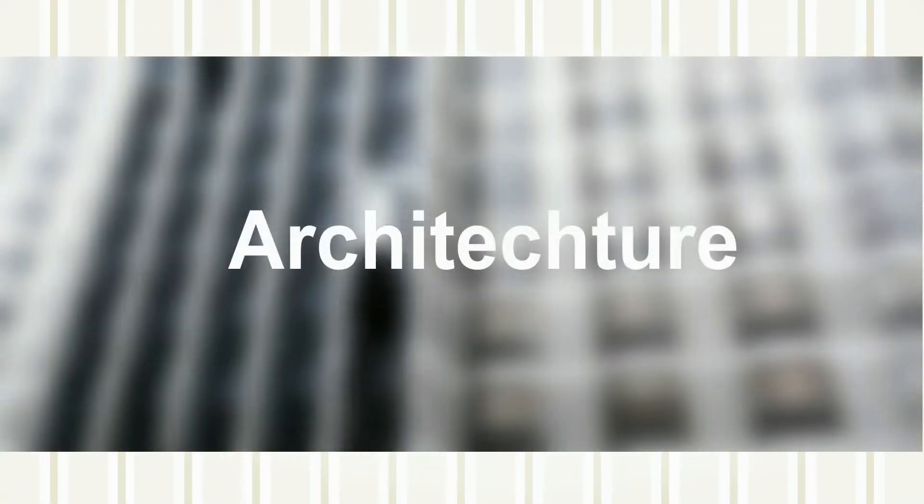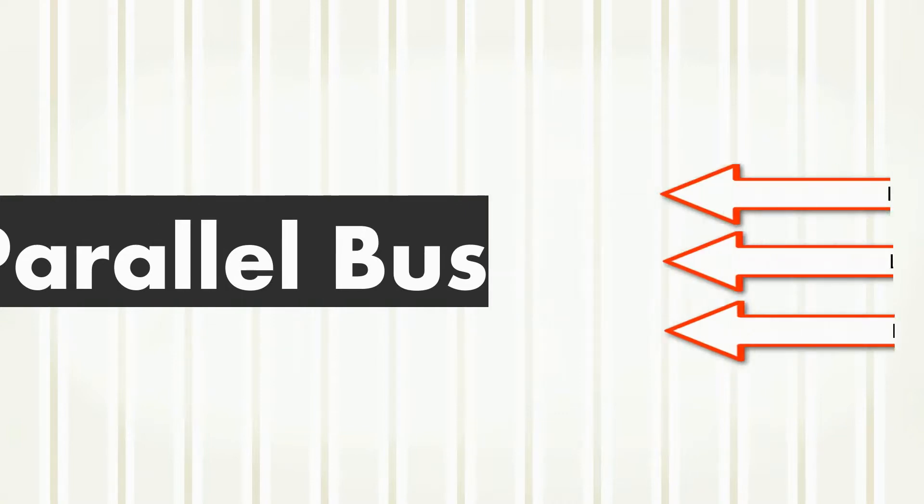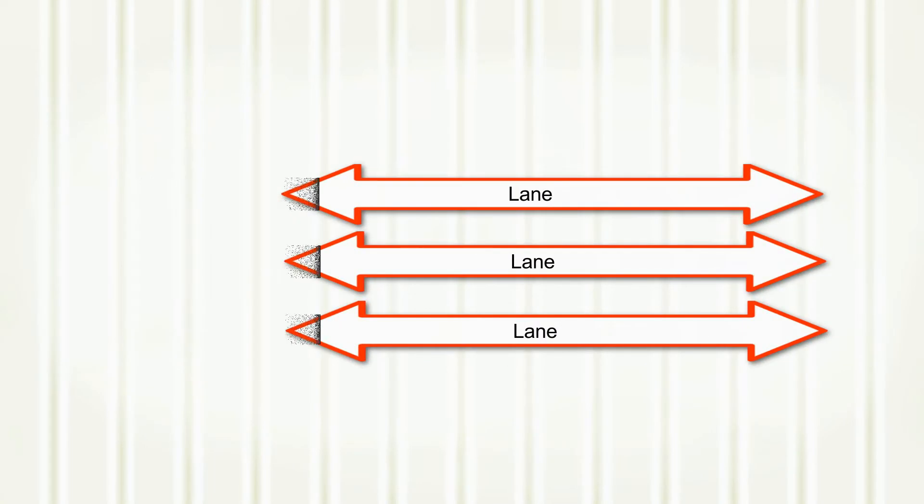So let us now take a look at the architecture of the parallel and the serial bus. A parallel bus uses multiple lanes to transmit information.